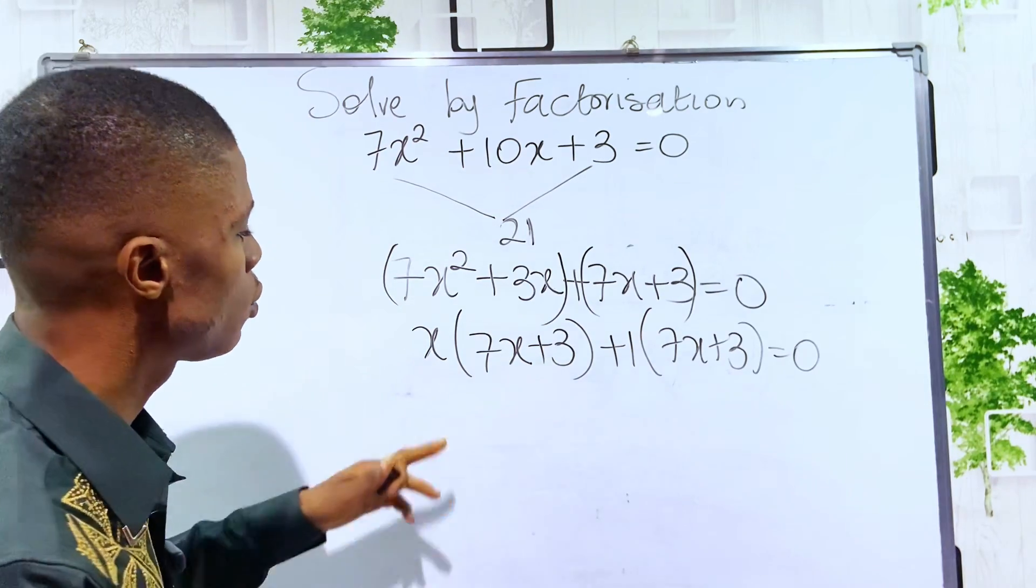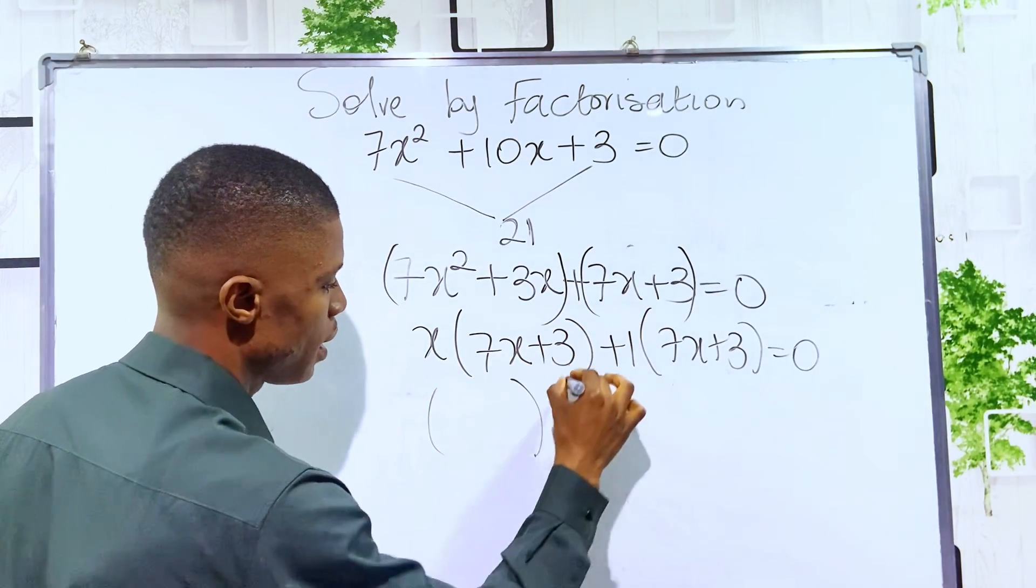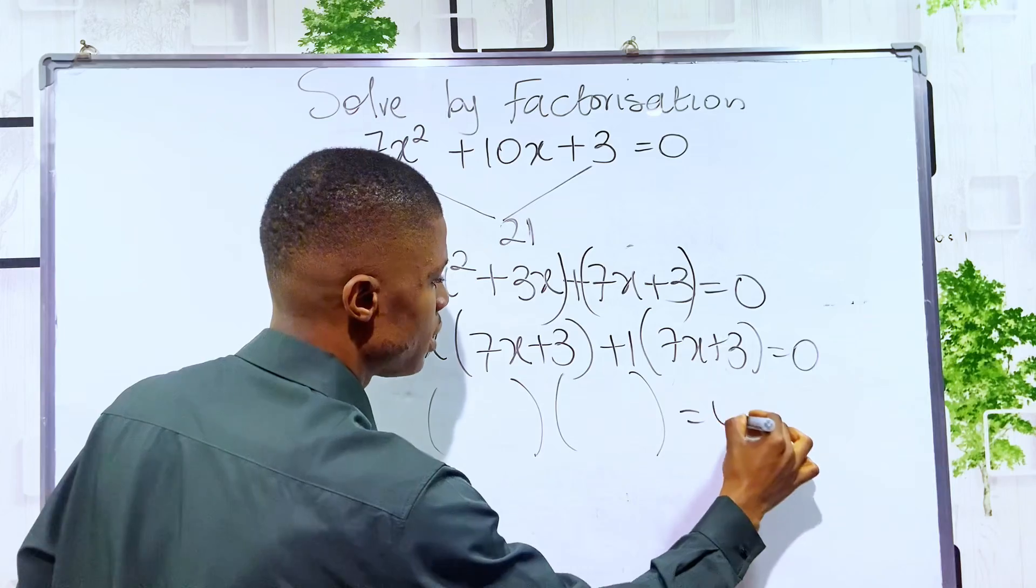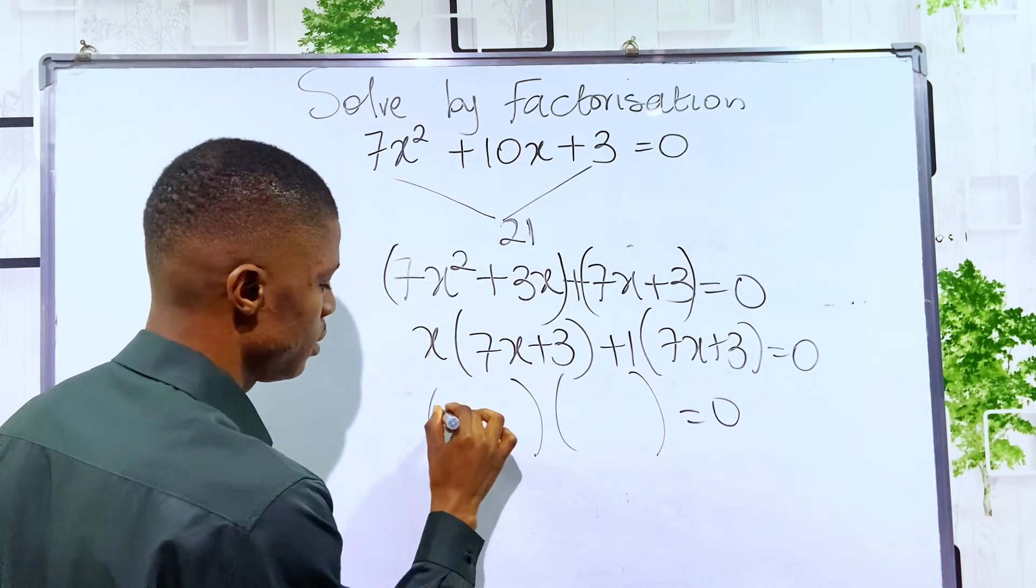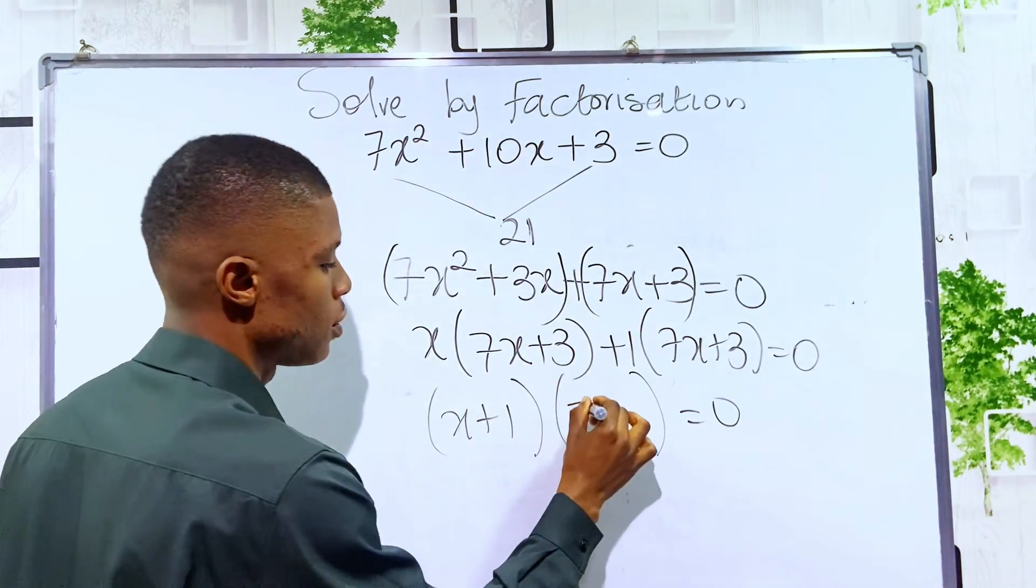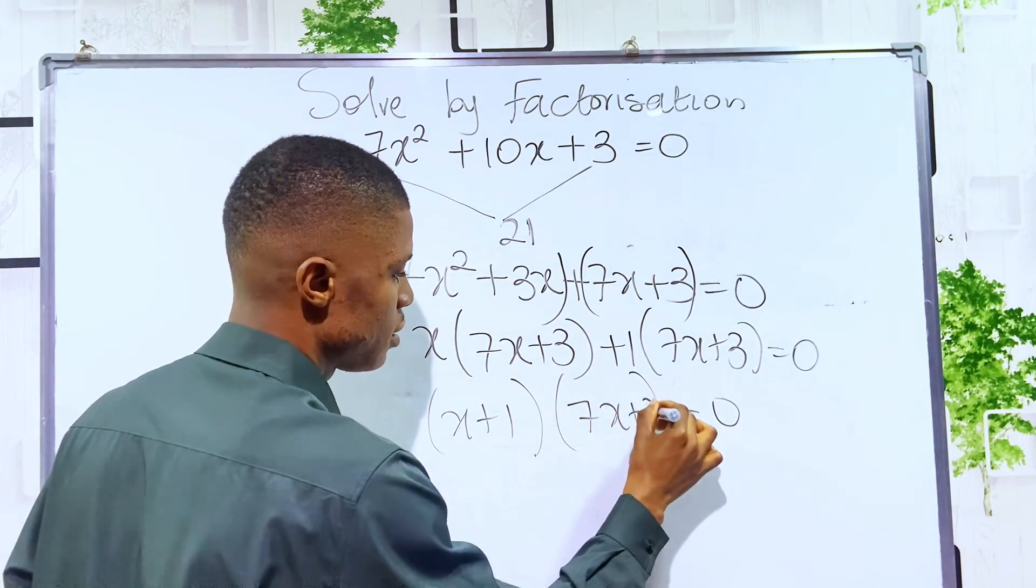So at this point, we now group the two factors in two brackets equal to 0: x plus 1, then the common factor, 7x plus 3.